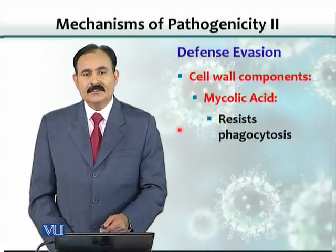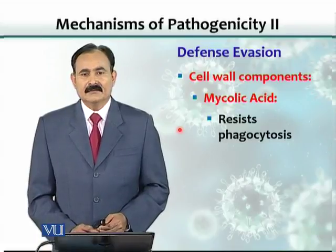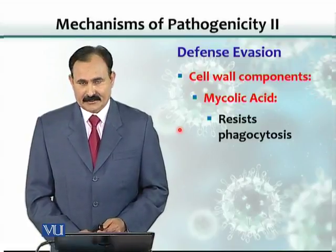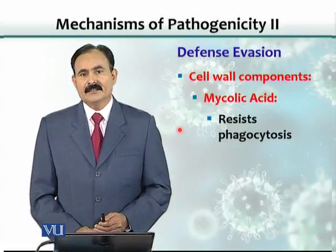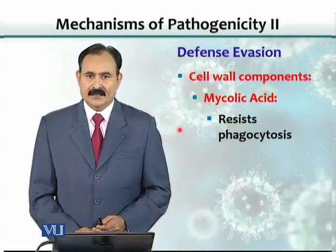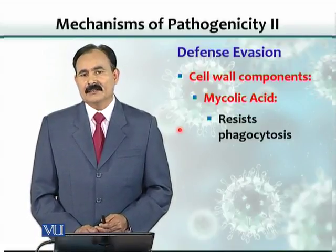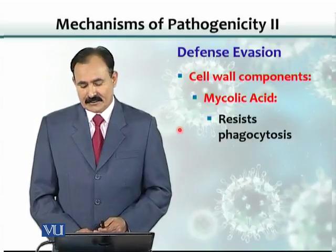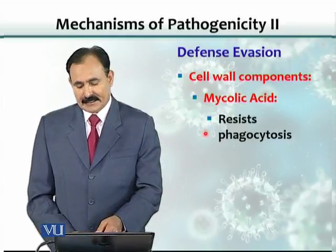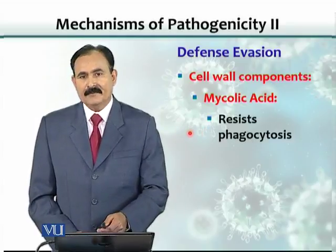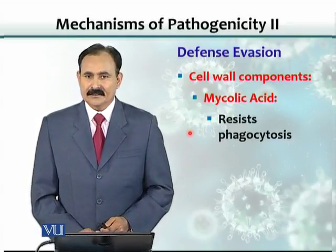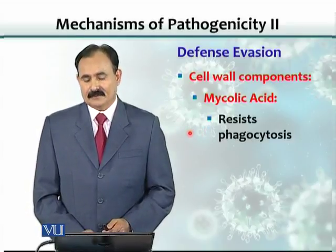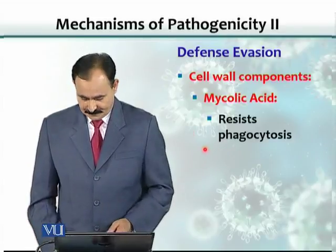Another substance is mycolic acid, present in some bacteria like Mycobacterium tuberculosis. It has the same capacity as the capsule, so it resists phagocytosis.